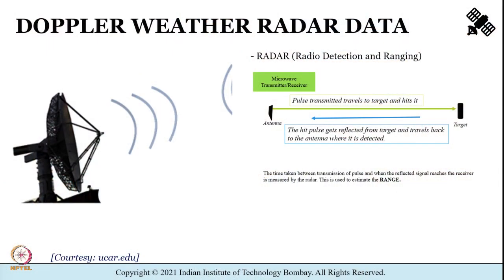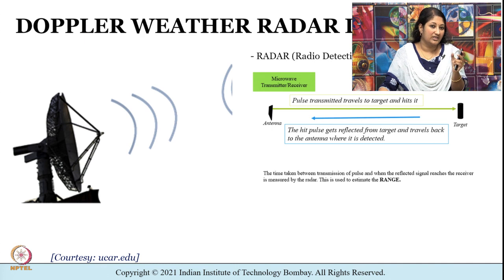Let me give you some details about what DWR is. DWR is an active microwave sensor which is used for monitoring the occurrence and movement of rainfall patterns. DWRs can be mounted on the ground, on trucks or on towers, and it provides valuable information about the timing, probability, location, type and intensity of rainfall.